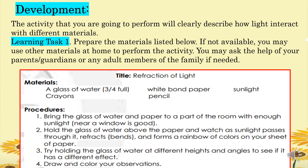Here are the procedures. First, bring the glass of water and paper to a part of the room with enough sunlight — near a window is good. Second, hold the glass of water above the paper and watch as sunlight passes through it, refracts, and forms a rainbow of colors on your sheet of paper. Third, try holding the glass at different heights and angles to see different effects. Finally, draw and color your observations.